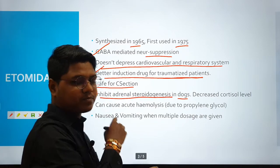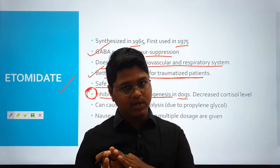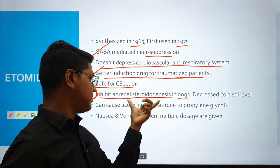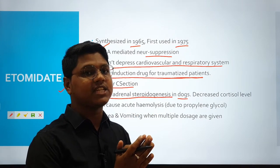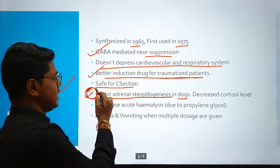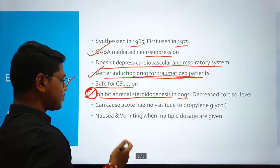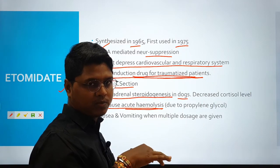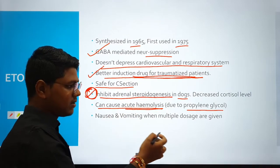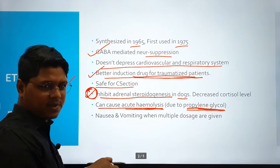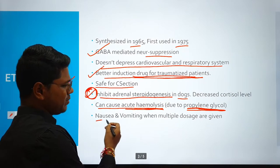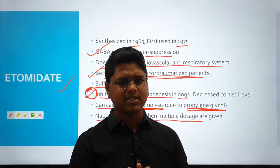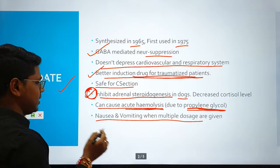Etomidate inhibits adrenal steroidogenesis in dogs. If you induce with etomidate, it suppresses the adrenal gland for nearly up to 3 hours. During surgery, the adrenal gland would normally be activated and epinephrine secreted, but etomidate reduces this stress response, making it a better drug for induction in traumatized patients. As a side effect, it can cause acute hemolysis because the injection contains propylene glycol, which can cause acute hemolysis — though not usually at therapeutic doses. Nausea and vomiting are also side effects, as with most anaesthetics.